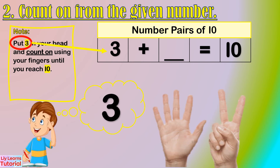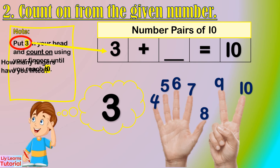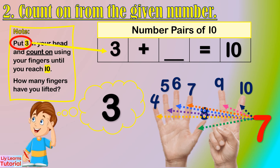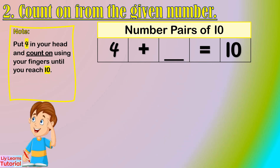Let's start from 3. Hold 3 in your head, then count on: 3, 4, 5, 6, 7, 8, 9, 10. How many fingers have you lifted? 1, 2, 3, 4, 5, 6, 7 — that's 7 fingers. So the number pair of 3 is 7.